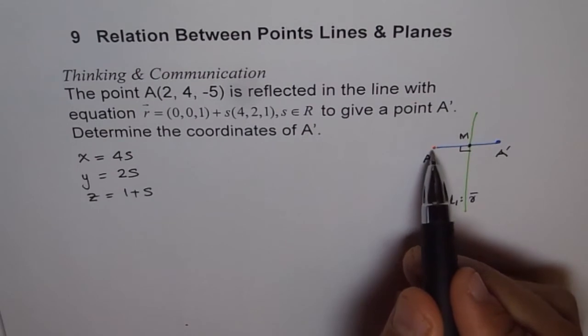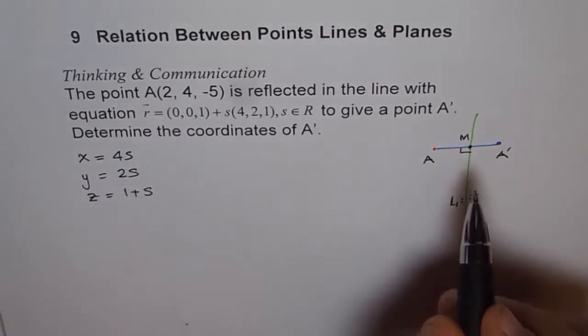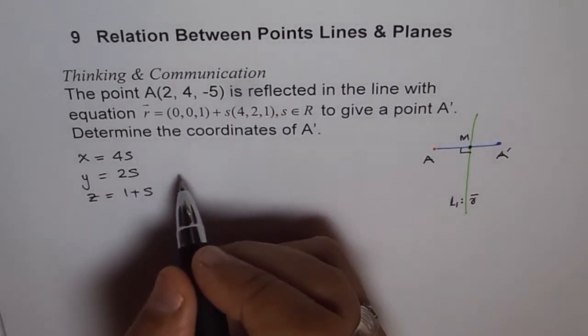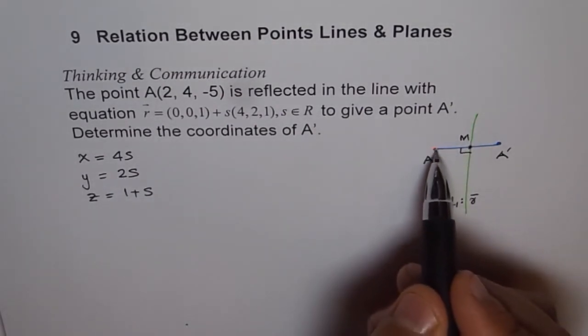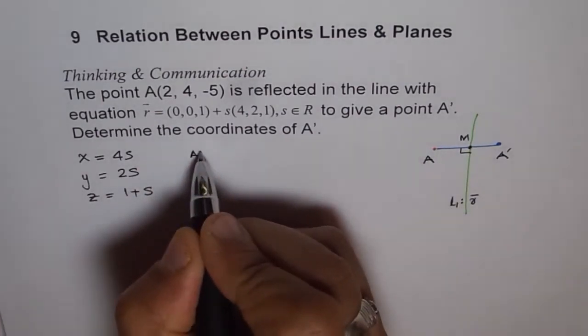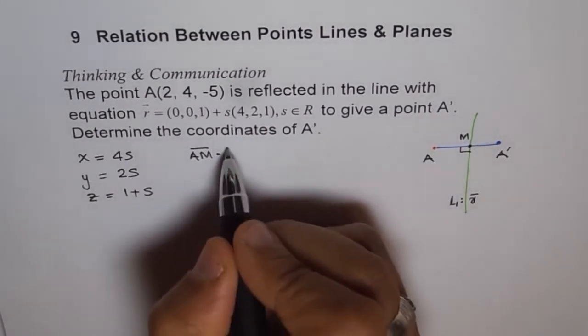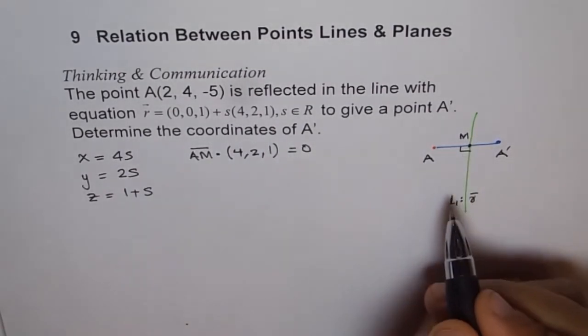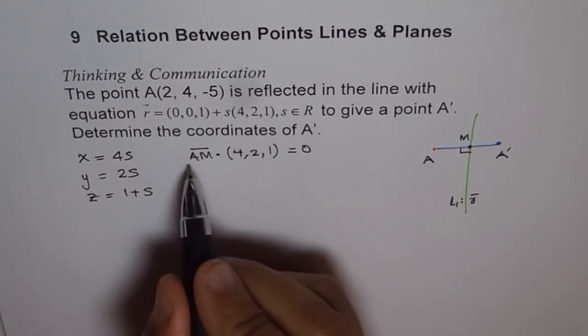Now, we know if I join point A and the midpoint, then it should be perpendicular to the line. So what is the direction for AM? So that is my point, and this is another point, this is the midpoint, on the line. In general, we don't know what the point is, but we can get the value of S from here. So what we are trying to say is, what is the equation which can help us find this? It is that direction AM dot the direction vector of the line, which is (4, 2, 1), should be equal to 0, because they are perpendicular.